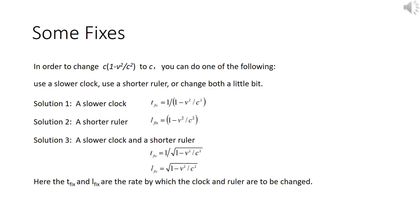Well, there are a few ways we can approach this problem. In order to change C times 1 minus V squared divided by C squared to C, you can do one of the following: use a slower clock, use a shorter ruler, or change both by a little bit.